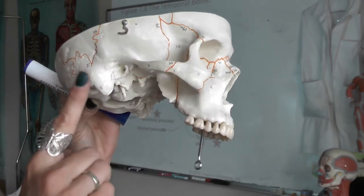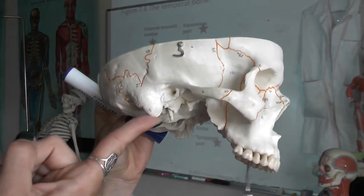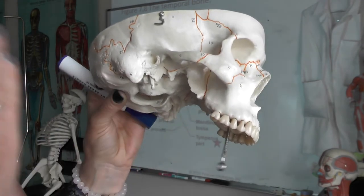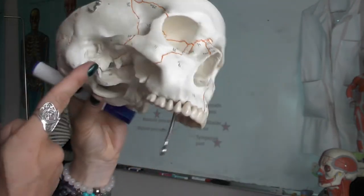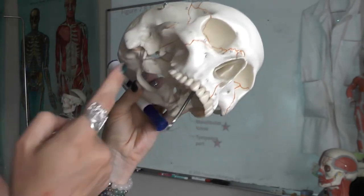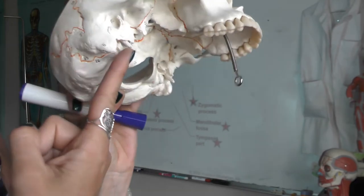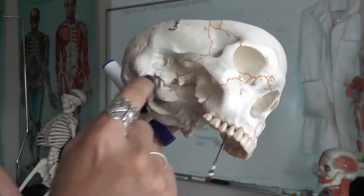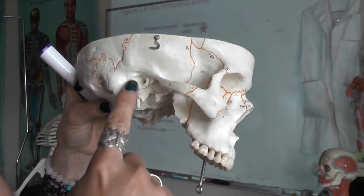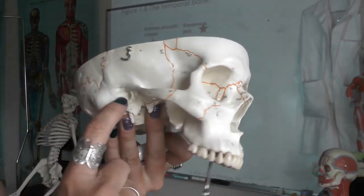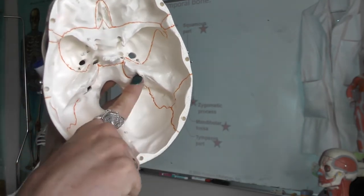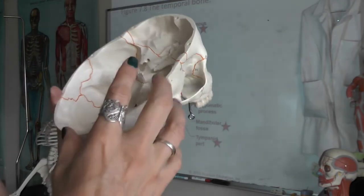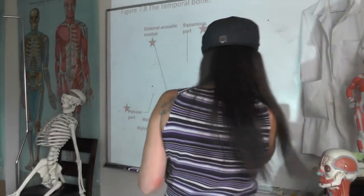Sticking off of the petrous part is the mastoid process. The sternocleidomastoid attaches to the mastoid process, and when you contract it, it pulls your head. The styloid process looks like a stylus — that's the styloid process. The tympanic part is right there — that's your external acoustic meatus. This is also the tympanic part, and coming through there is your internal acoustic meatus. Those are the things you have to be able to identify for the temporal bone.